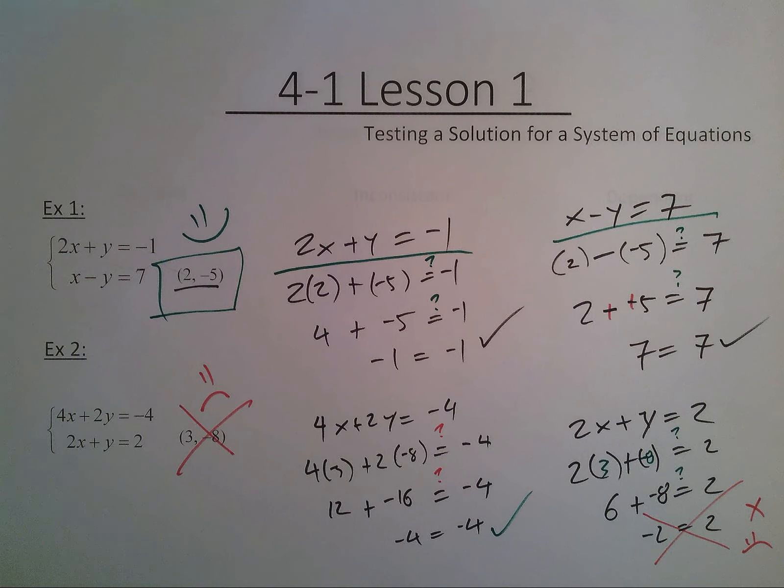So 3 negative 8 is not a solution to the system 4x plus 2y equals negative 4 and 2x plus y equals 2. All right. In the next video, I'm going to talk about other possibilities. And I'm going to talk about it more in a generic form. But for testing out a system, it's as simple as plugging in the values.